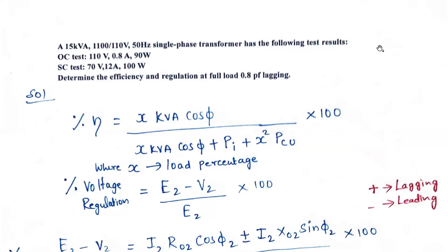Good morning. Today we are going to solve a simple circuit on a single-phase transformer to calculate its efficiency and voltage regulation at full load. Take down this problem: a 15 kilovolt-ampere, 1100/110 volt, 50 hertz single-phase transformer has the following test results. In the open circuit test, we have an open circuit voltage of 110 volts, open circuit current of 0.8 amperes, and 90 watts.